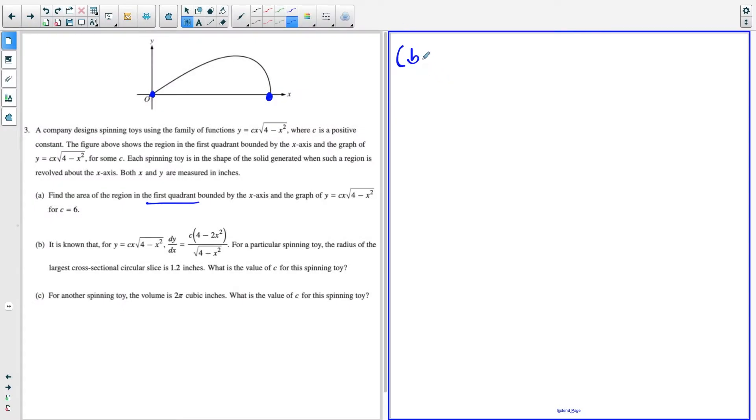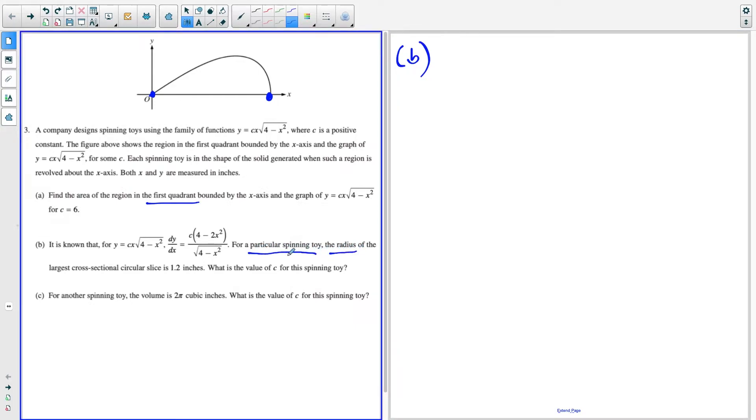So for part B, the algebra is going to be easier, but the concept is a little trickier. So here, they're giving us the derivative, and they're telling us for a particular spinning toy, the radius of the largest, that's the million dollar phrase right there, the largest cross-sectional circular slice is 1.2 inches. And we have to find the value of C for the spinning toy. So when you think about it, the way these toys are made, or like the visual of these toys, is that we spin this region around the x-axis.